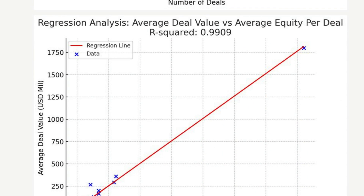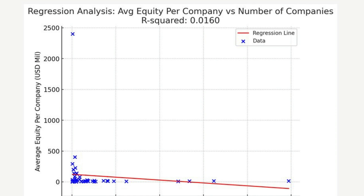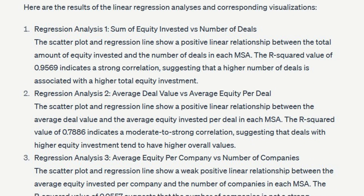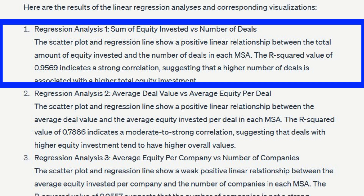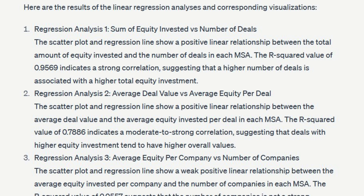For each regression model, ChatGPT generated charts showing how the regression looks, plus a narrative. For regression one — sum of equity invested versus number of deals — the scatter plot and regression line show a positive linear relationship. The R² value of 0.9569 indicates a strong correlation. The explanation of R² could be more technical in terms of model explainability, but for a simple English prompt, this is super impressive.